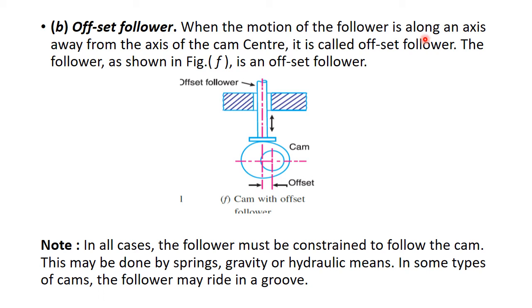Offset follower. When the motion of follower is along an axis away from the axis of cam center, you can see that that is the cam center. And the line of action passing through the follower just away from the center of cam. That type of cam and follower arrangement comes into the category of offset follower.